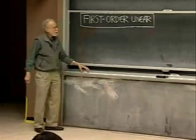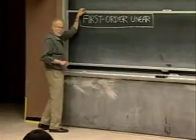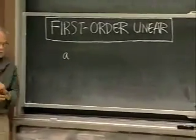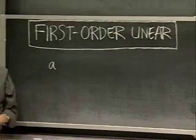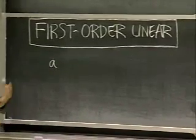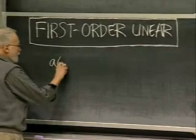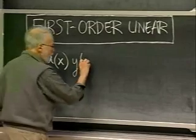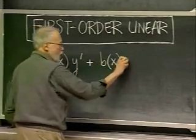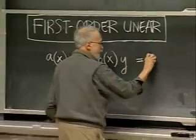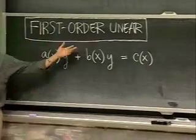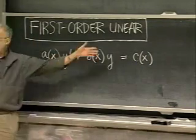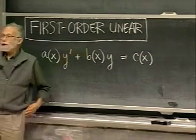What does such an equation look like? I'll use X as the independent variable because that's what your book does, but in applications it's often T for time. The equation looks like this: some function of X times Y prime, plus some other function of X times Y, equals yet another function of X. X doesn't have the same status as Y here — Y is extremely limited in how it can appear, but X can be pretty much arbitrary.